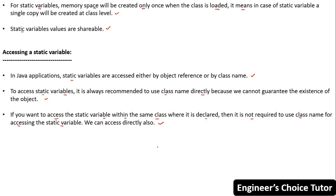We will see all three access points in one example. The syntax to access a static variable is: class name, then dot operator, then the variable name.